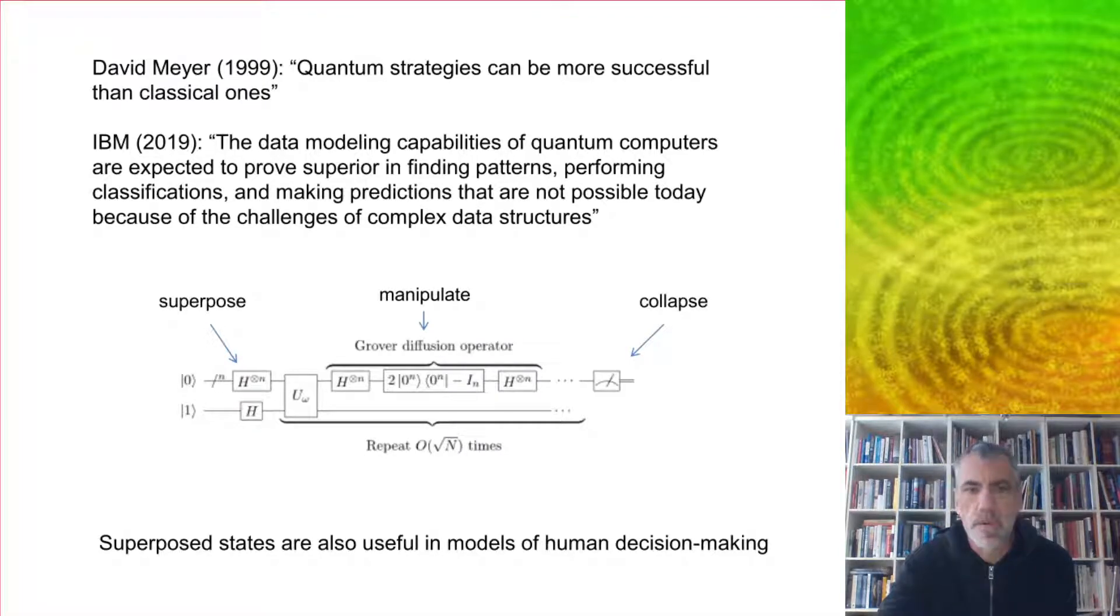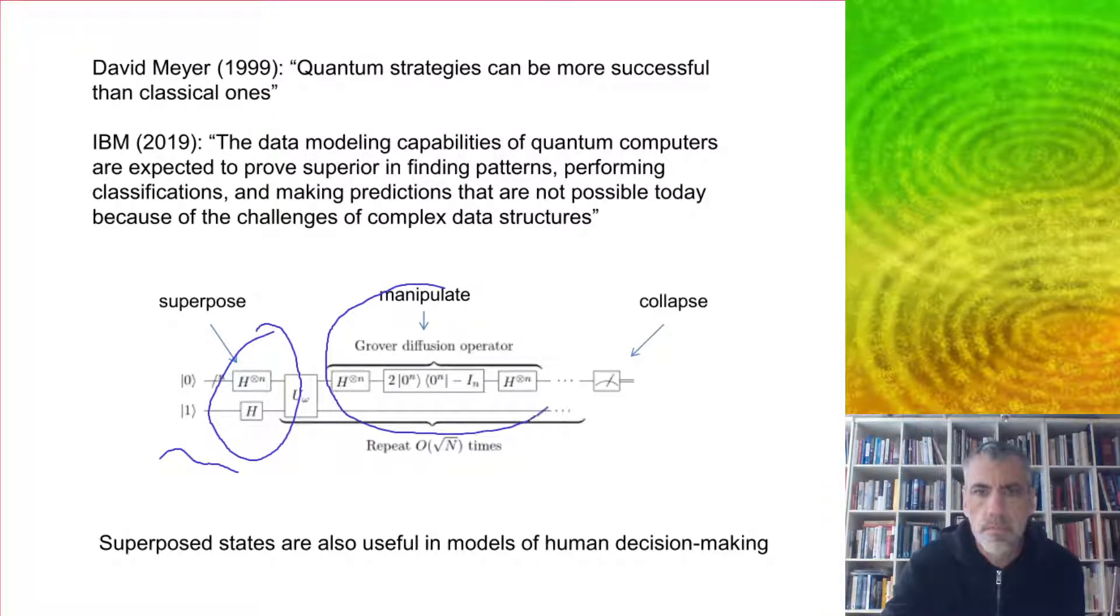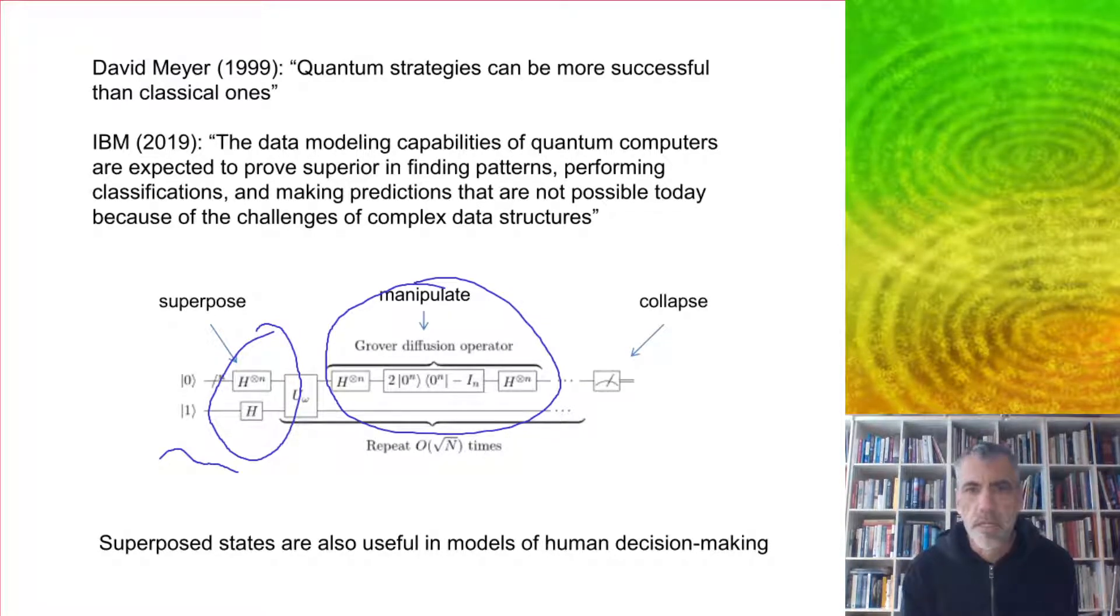A typical quantum algorithm, like Grover's search algorithm, takes some initial qubits and superposes them, puts them into a superposed state using versions of the Hadamard transformation on each qubit. Then it does a particular operator which again involves a mix of the Hadamard transformation and other simple transformations. And then you collapse at the end to get the answer. The main point is that quantum computers can use extra space to do moves which are simply not possible using classical computers. And it's exactly these moves that seem to play such a key role in human cognition.